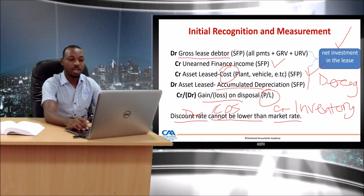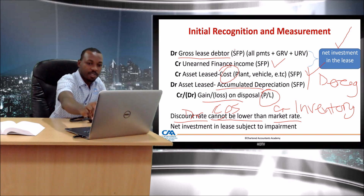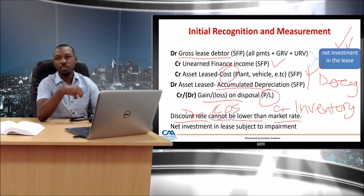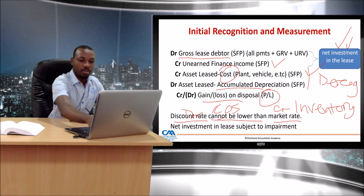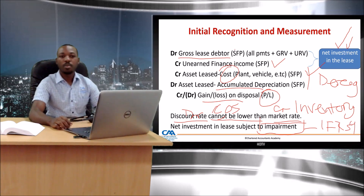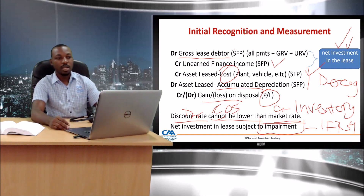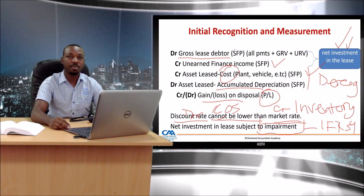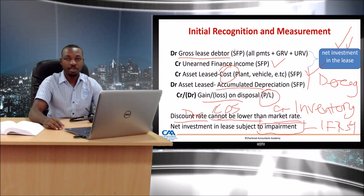The net investment in the lease is a financial instrument because it is a right to receive cash. That means IFRS 9 kicks in — you need to bring in the IFRS 9 element with regards to impairment. You go back to the impairment model of IFRS 9. A lease receivable qualifies for the simplified approach; if the election for the simplified approach has not been made, the general approach can be used instead.